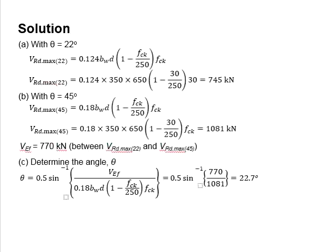First, you need to determine the angle. Use the equations for VRd maximum at 22 degrees. You will get 745 kN. This value is smaller than VEF of 770 kN.